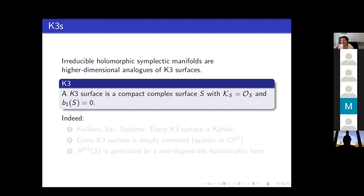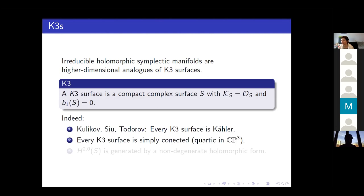Let's mention K3 surfaces. Irreducible holomorphic symplectic manifolds — in other words, hyperkähler manifolds — are higher dimensional analogues of K3 surfaces. A K3 surface is a compact complex surface with trivial canonical bundle and vanishing first Betti number. By results mostly due to Yau, with some corrections by Kulikov and Todorov, every K3 surface is Kähler. Also, every K3 surface is simply connected because any two K3s are deformation equivalent to each other — if you take a quartic in CP3 as a complete intersection, it is simply connected. One can compute the whole Hodge diamond of a K3 surface, and indeed H^{2,0} is one-dimensional.